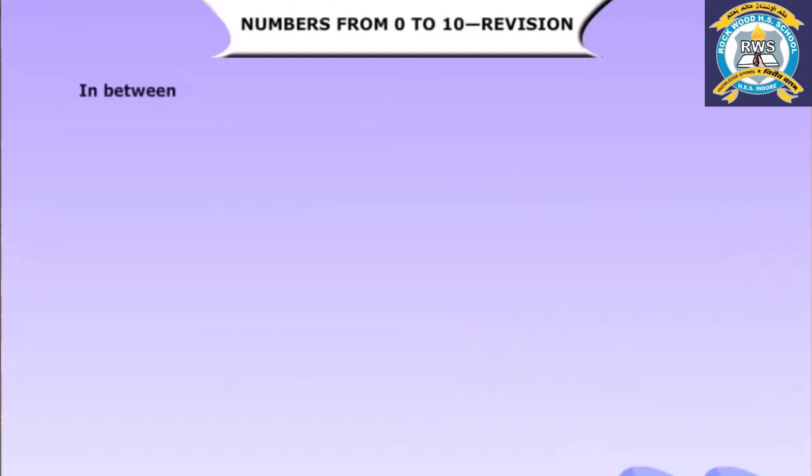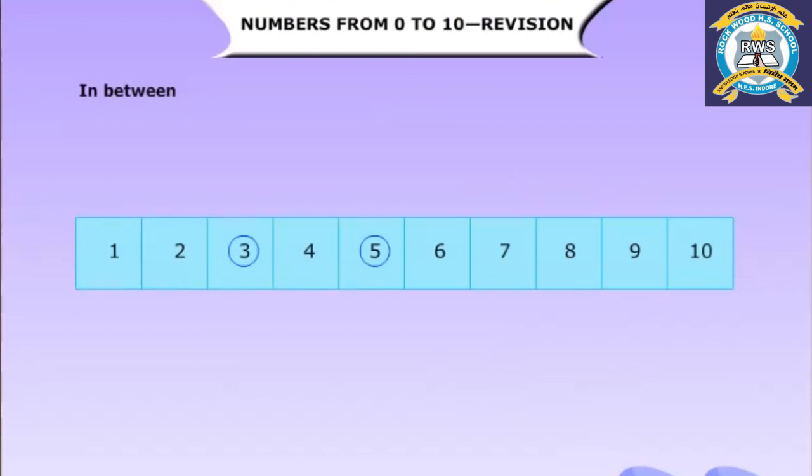In between. Let us take any two numbers, say three and five. The number in between three and five is four.